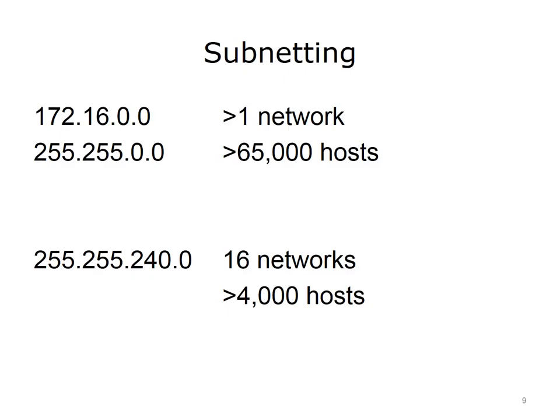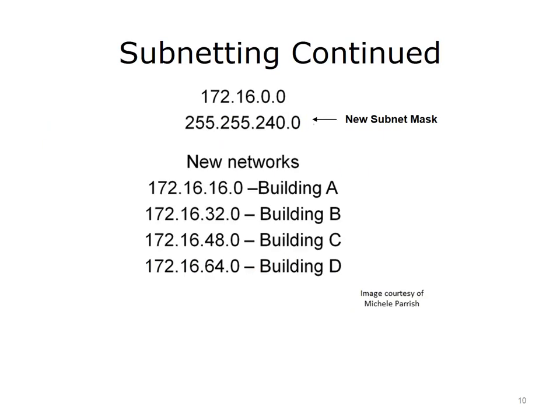An IP address has two parts. The first part identifies the network that the host belongs to, and the second part uniquely identifies that device on that network — similar to a street name and building number. In networking, the subnet mask tells us which part of the address is the network and which part is the host. Wherever there are ones in the subnet mask, that is the network portion; where there are zeros, that is the host portion. For example, 192.168.12.14 is a Class C address, so the default subnet mask is 255.255.255.0. The first three octets identify the network, and the last octet identifies the host.